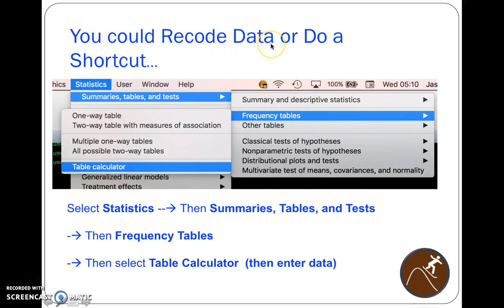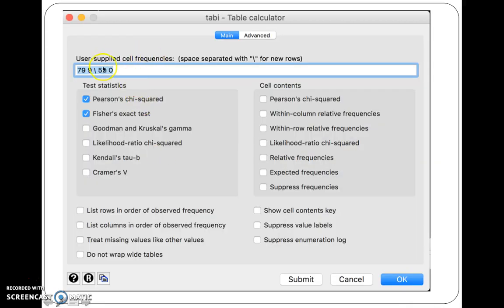So you could recode the data and do a lot of generate and replace commands, or you can do a shortcut. And let's do the shortcut. You can do the shortcut by the command or by pointing and clicking. So you can click on statistics, then summaries, tables, and tests, then frequency tables, then table calculator. And then it will let you enter the data. You can put in whatever data you want. The space separates the rows. So this is row 1, column 1, column 2. Row 2, column 1, column 2.